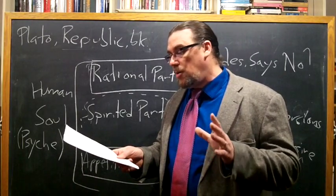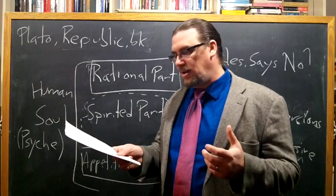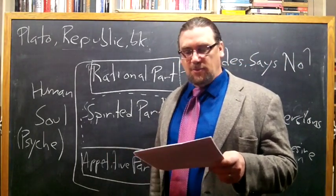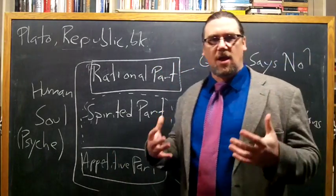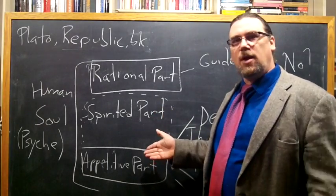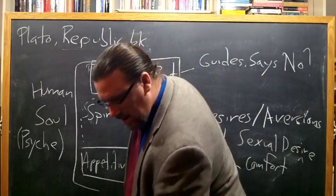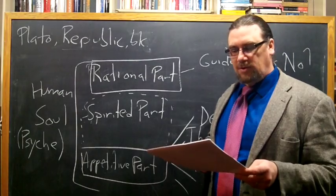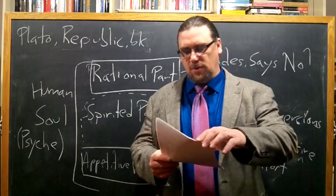So he says, suppose that a man thinks he's done a wrong to another. The nobler, the better character he has, the less able he is to feel indignant at any suffering, such as hunger or cold or any pain, the sort of things that appeal to the appetitive part, that the injured person may inflict on him. These he deems to be just, and his anger refuses to be excited against them. So if we've got our spirited part lined up right, you might say, if it's in good condition, and we offend somebody, and that person takes some money away from us, or doesn't invite us to dinner, we don't get upset with them. We say, I've got it coming.